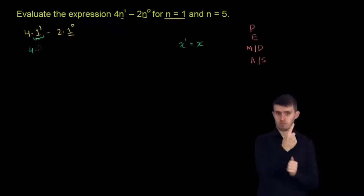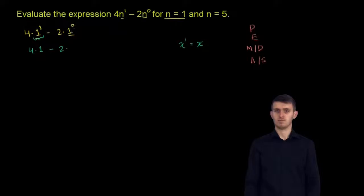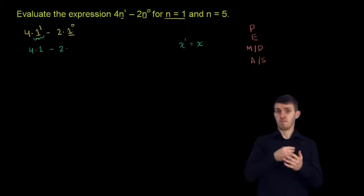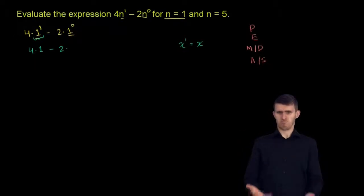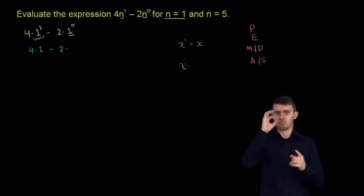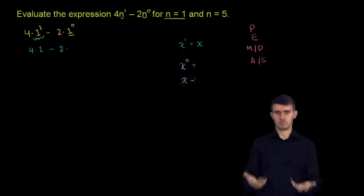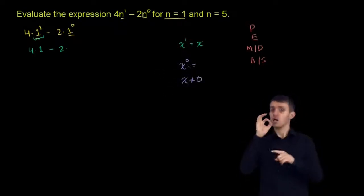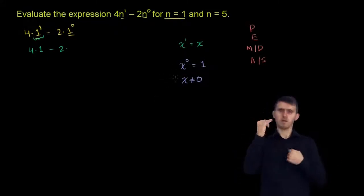So this is going to be 4 times 1 minus 2 times 1 to the 0th power. Now, any number other than 0 to the 0th power is going to be 1. So if I tell you x to the 0th power, and I tell you that x is not equal to 0, what is x to the 0th power? You should immediately know that it is equal to 1.